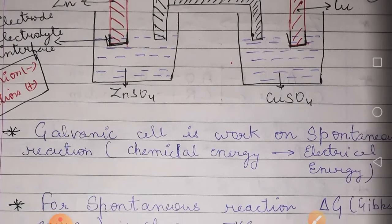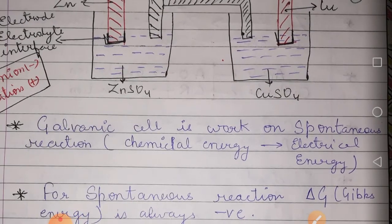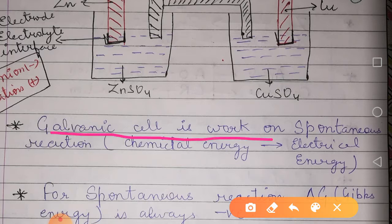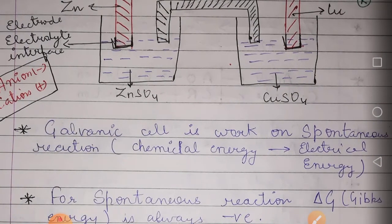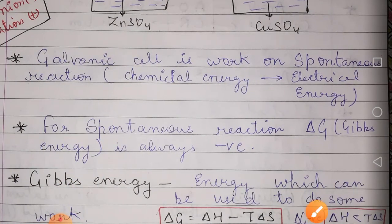The first thing is that a galvanic cell works on a spontaneous reaction — a reaction that does not need any external energy to be provided. The reaction takes place by itself. This is called a spontaneous reaction, and in it, chemical energy is converted into electrical energy.